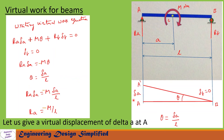Now to find reaction at A (Ra), let us give a virtual displacement of δa at A. At B, δb equals zero, and at A the displacement is δa. Since this angle is small, we can write θ equal to δa divided by L. The virtual work equation is: Ra·δa + M·θ + Rb·δb = 0. In this equation δb equals zero and θ equals δa/L.